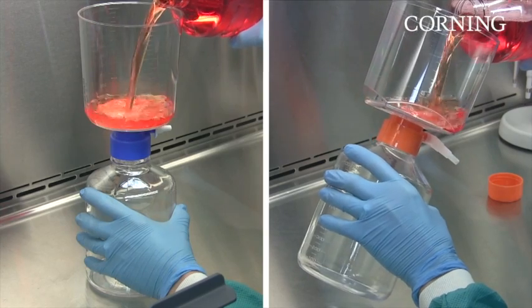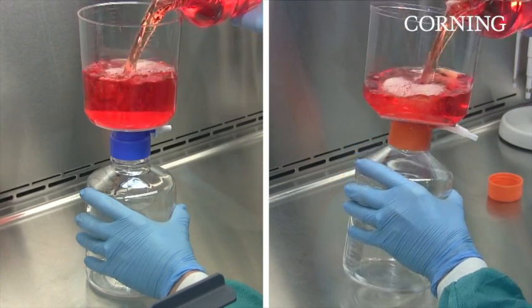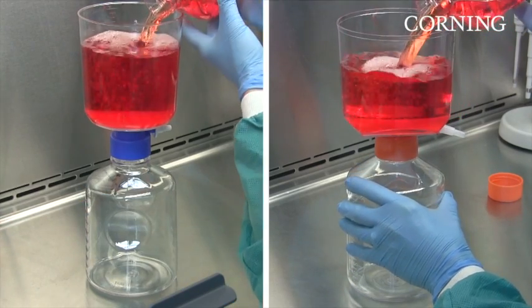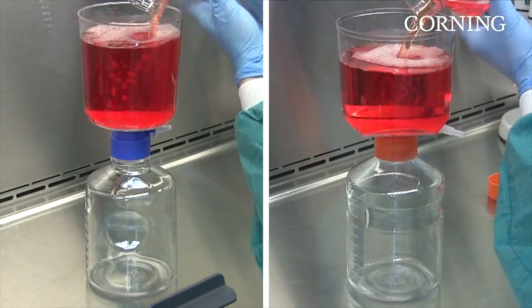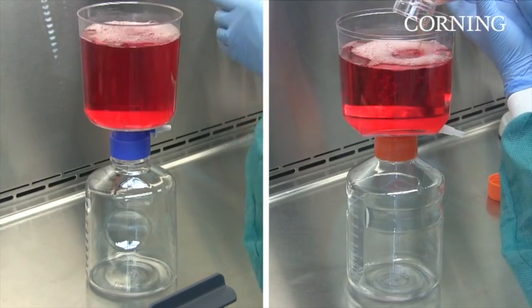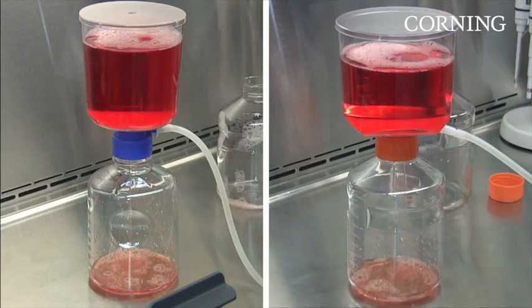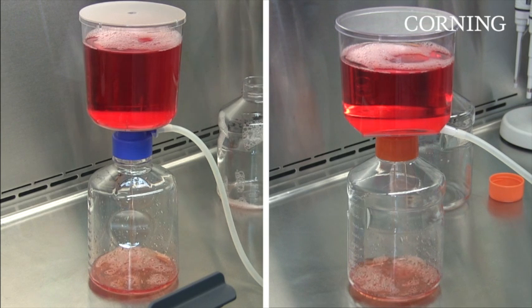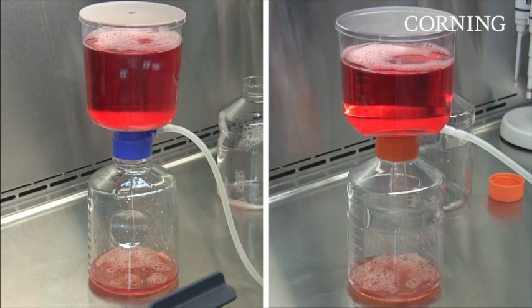To demonstrate the difference in hold-up volume, we will filter Corning media supplemented with 10% FBS serum through two different 1L filtration systems with a 0.22 micron PES membrane, one from Corning and one from another commonly used brand.